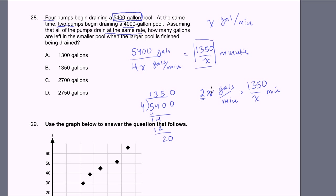This is going to tell us how many gallons have pumped out of the 4,000 gallon pool. The x's cancel out, the minutes cancel out, so our answer will be in gallons. It's 2 times 1,350, which equals 2,700 gallons. That's how much has been pumped out of the 4,000 gallon pool. So if we started with 4,000 and subtract 2,700, that's 1,300 gallons left in the pool. So that is choice A.